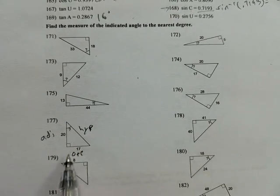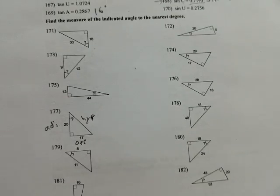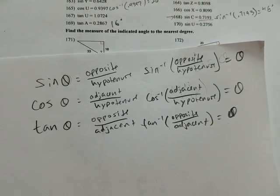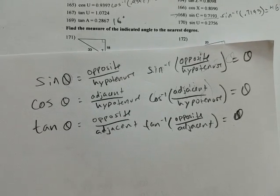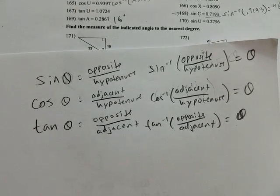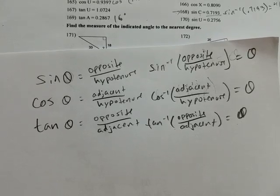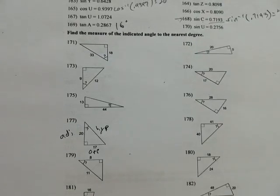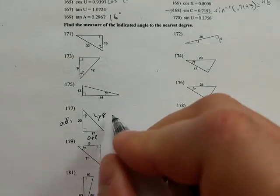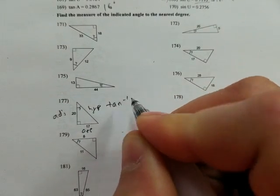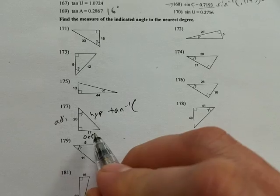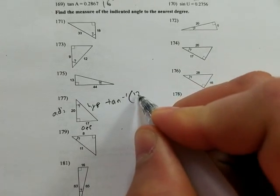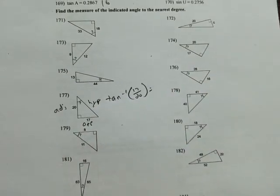Now if we have opposite and adjacent, we go back to our trig function list and we say which one deals with opposite and adjacent, that's tangent. So since we know the ratio and we want to know the angle, we can just do inverse tangent of that ratio, which is opposite over adjacent, so 17 over 20, and it will give us our angle.